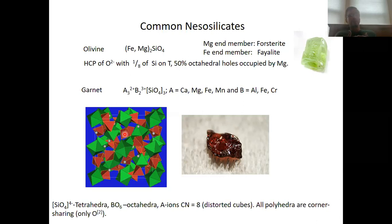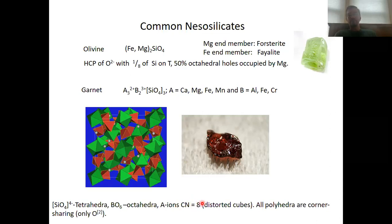In particular, there are BO6 octahedra — shown here in green — which would be AlO6, FeO6, or CrO6. These green octahedra interconnect the red tetrahedra to produce a three-dimensional network. The A ions are located in the voids produced by that framework of interconnected octahedra and tetrahedra, whereby the A ions have a coordination number of eight. They are surrounded by oxygen ions belonging to the SiO4 and BO6 octahedra in a distorted cubic arrangement. Overall, all polyhedra are corner-sharing.